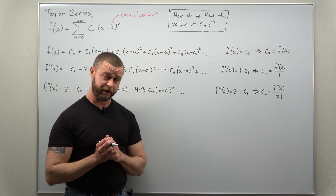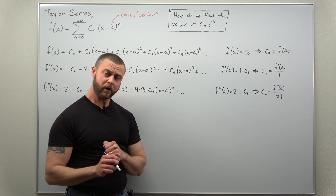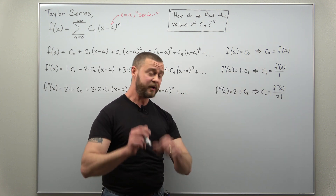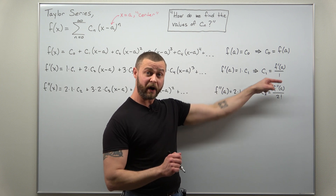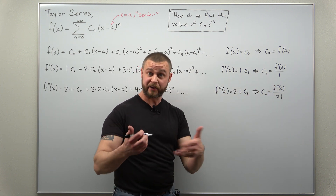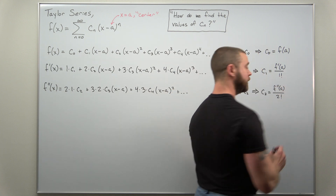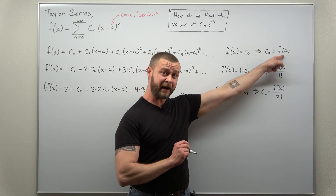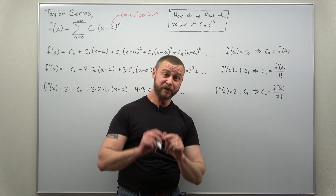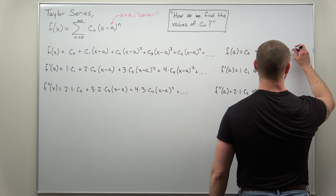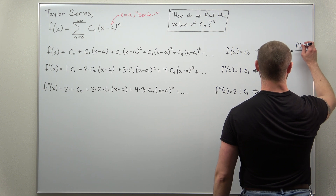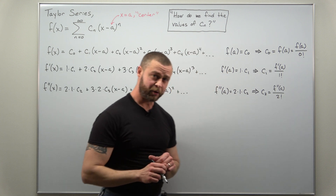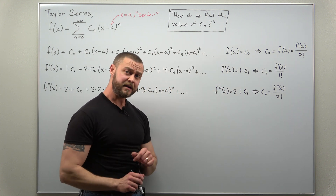The factorial pattern is now emerging. Notice we can write the denominator for c sub 1 as 1 factorial, since 1 factorial equals 1. And for c sub 0, dividing by 1 is the same as dividing by 0 factorial. So we can write c sub 0 as f of a divided by 0 factorial, c sub 1 as f prime of a divided by 1 factorial, and c sub 2 as f double prime of a divided by 2 factorial.